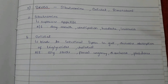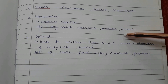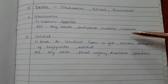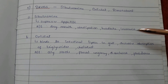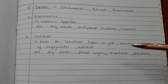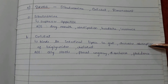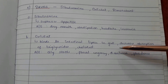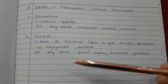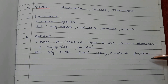The first drug is sibutramine, which suppresses appetite. Adverse effects include dry mouth, constipation, headache, and insomnia. Orlistat binds to intestinal lipase in the gut and decreases the absorption of triglycerides and cholesterol. Adverse effects of orlistat include oily stools, fecal urgency, diarrhea, and flatulence.